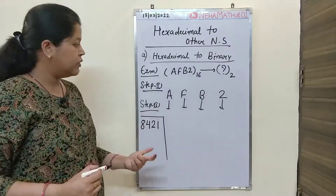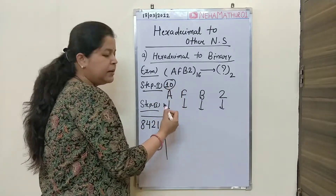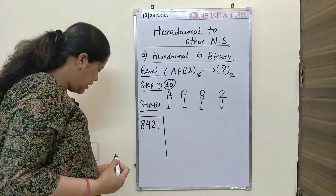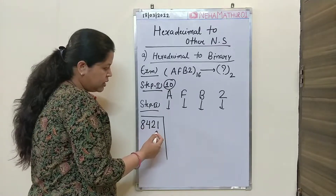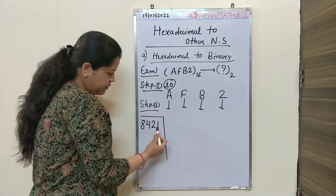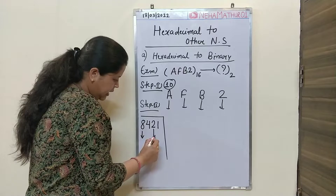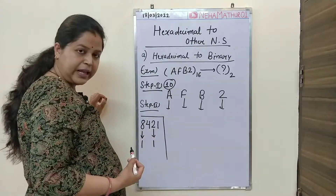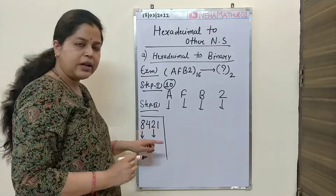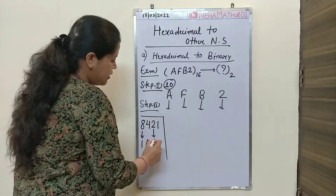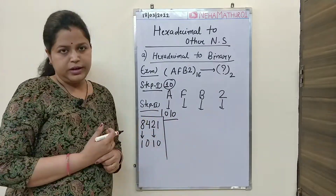Now you want to convert capital A, which means 10, into its 4-bit binary equivalent. Using the 8421 method, we need to find which digits add up to 10. By adding 8 and 2 we get 10, so we take 1 and 1 for those positions, and the remaining digits 4 and 1 are not used, so we write 0. For A, the 4-bit binary equivalent is 1010.